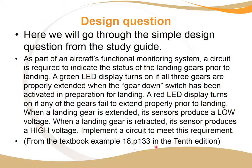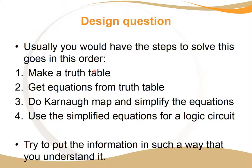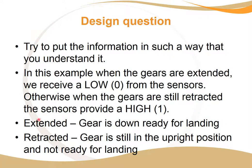This is from the textbook, example 18, page 133 of the 10th edition of Floyd. Usually we would use these steps to solve this in order: we make a truth table, get the equations from the truth table, do the Karnaugh map to simplify the equations, then use the simplified equations to make the logic circuit. But first we have to put the information in a way we understand, because with word problems there's a lot of information and not all of it really helps you.